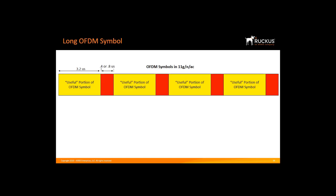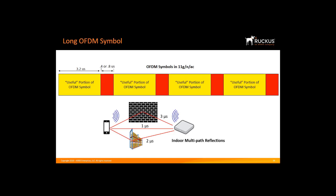OFDM works by transmitting data for 3.2 microseconds, then transmitting a guard interval, and then repeating the process. The guard interval is either 0.4 or 0.8 microseconds. A 0.4 microsecond guard interval is called a short guard interval, which means OFDM has about a 20% overhead rate — effectively 20% of the airtime is wasted. When wireless transmits a signal, it reaches the destination receiver directly and also gets reflected off walls, ceilings, and other obstacles before reaching the receiver.